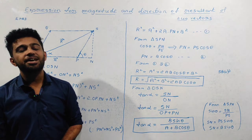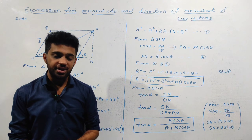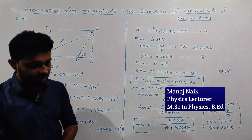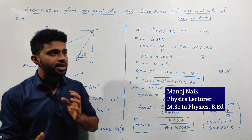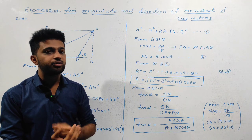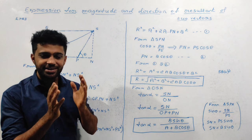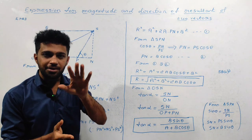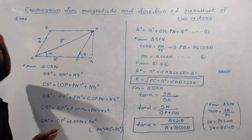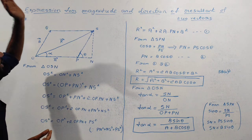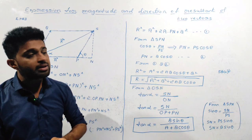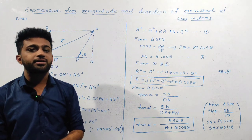Welcome to the EducateLight4Raf channel. In this class, we will study the Triangle Law of Vector Addition and the Parallelogram Law of Vector Addition. There is an important 5-mark derivation: we are deriving the expression for magnitude and direction of the resultant of two vectors.